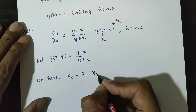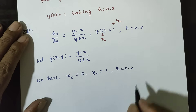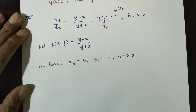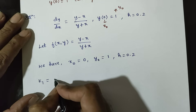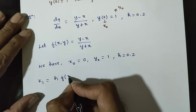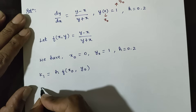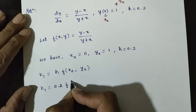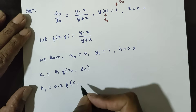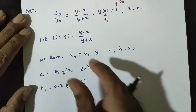This part is k1. The k1 formula is h into f of x0, y0. We will substitute: h = 0.2, f of x0, y0 — substituting y0 = 1.